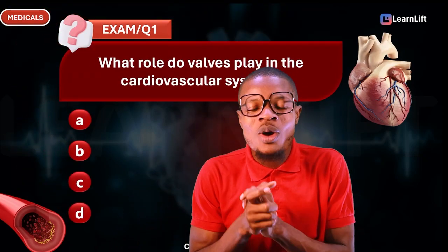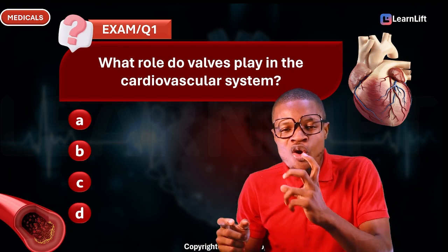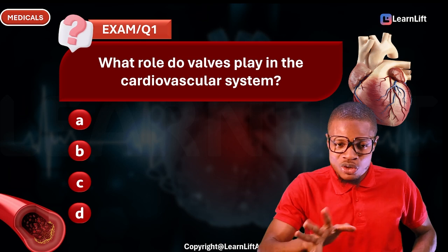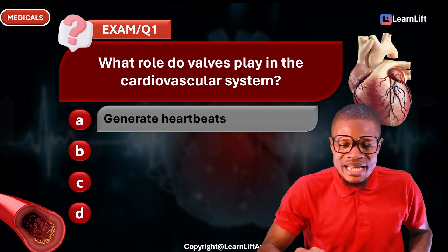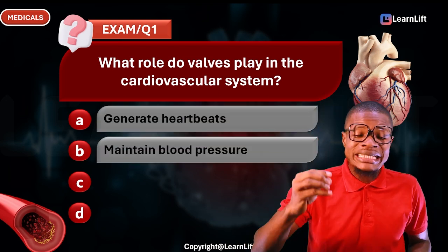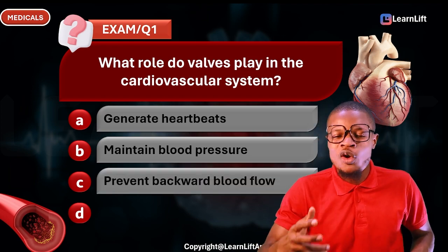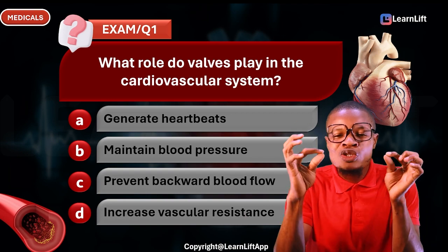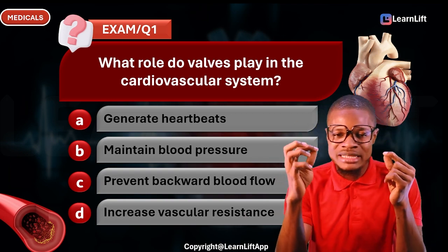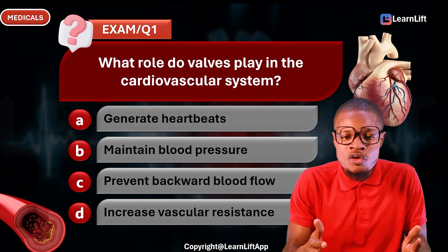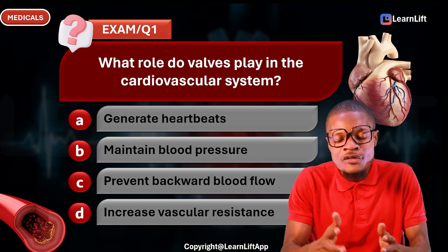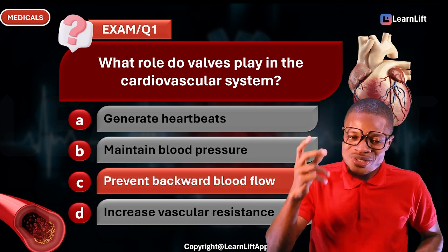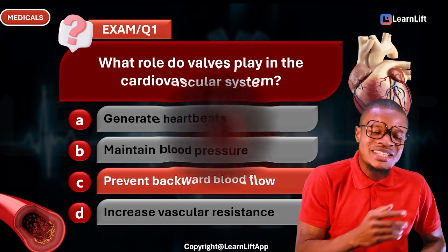Question one: What role do valves play in the cardiovascular system? Option A: generate heartbeat. Option B: maintain blood pressure. Option C: prevent backflow of blood. Option D: increase vascular resistance. The correct answer is Option C — valves ensure unidirectional, one-way flow of blood and prevent the backflow of blood.